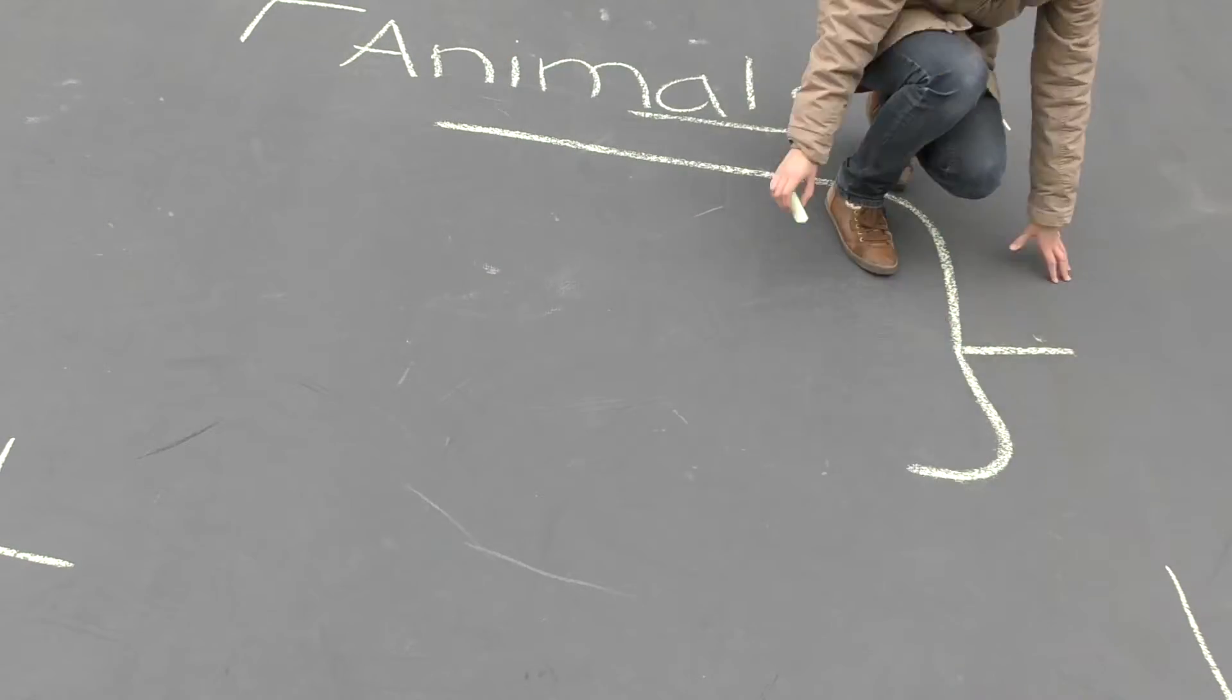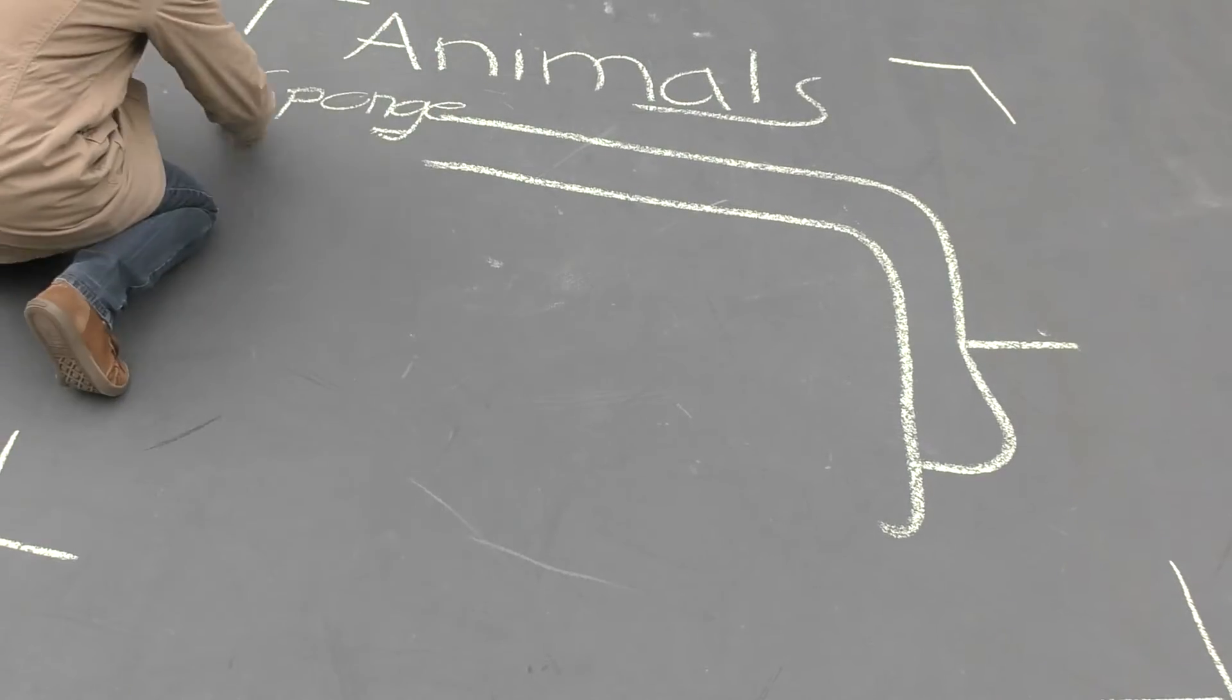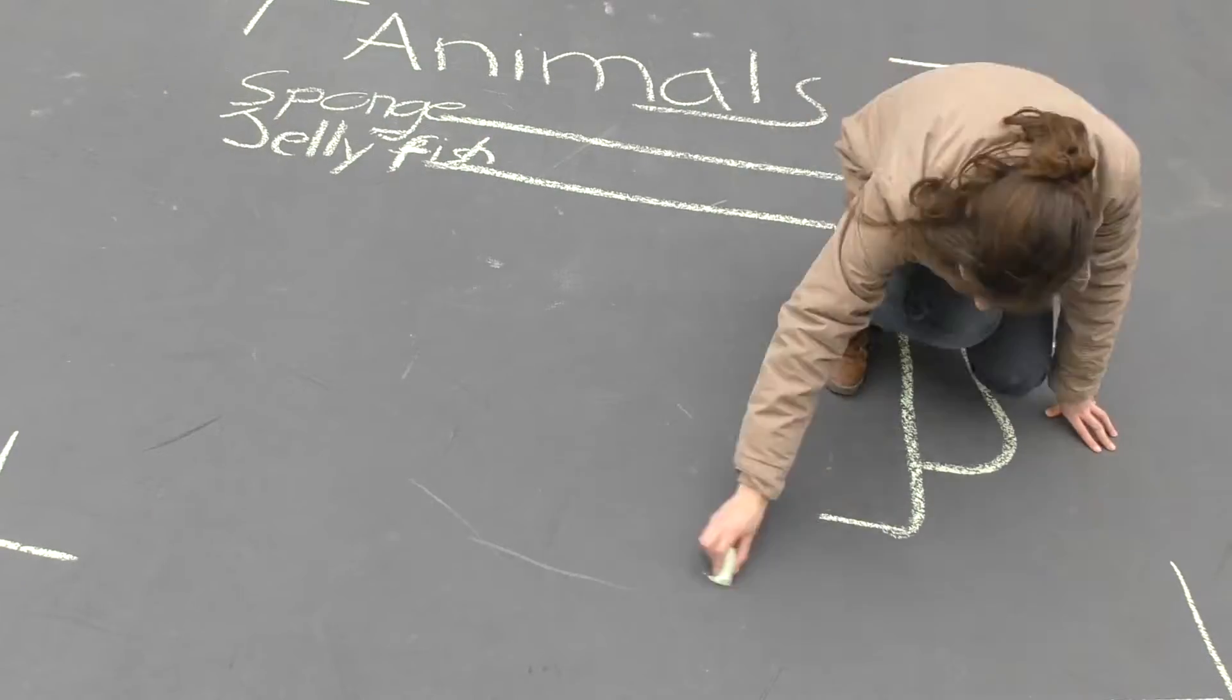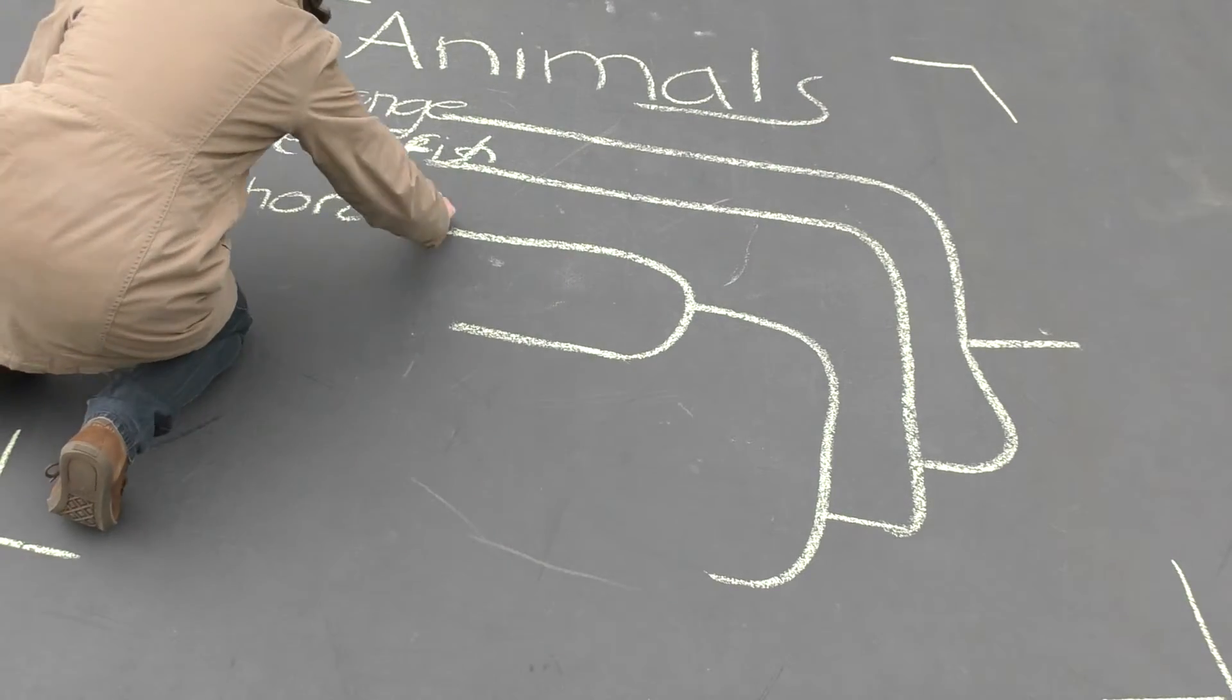If we zoom in on the animals, we can once again divide them up into evolutionary groups. Firstly, the sponges branch off, then the jellyfish. Those are the most basal groups. Then there are two big clusters.